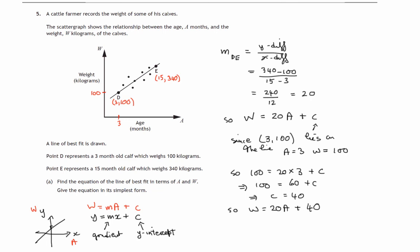We can now go to the second part of this question. And it says use your equation from part a to estimate the weight of a one-year-old calf. Now notice the scale here is in months. So a one-year-old calf would be age 12 months.